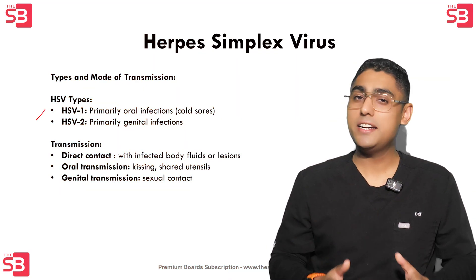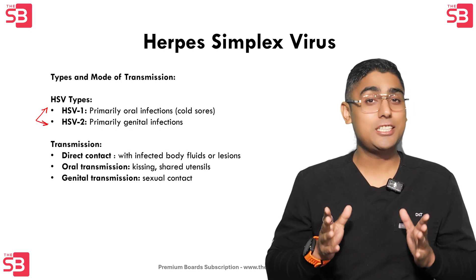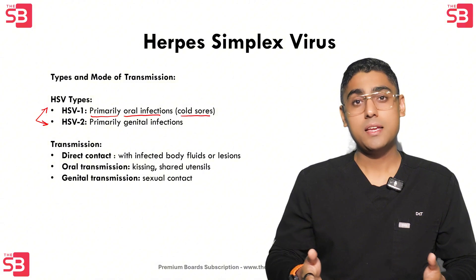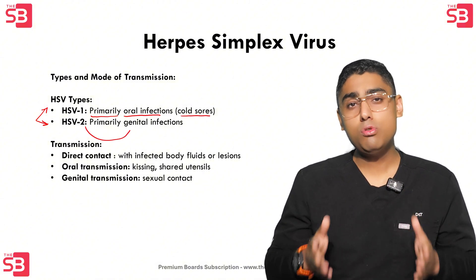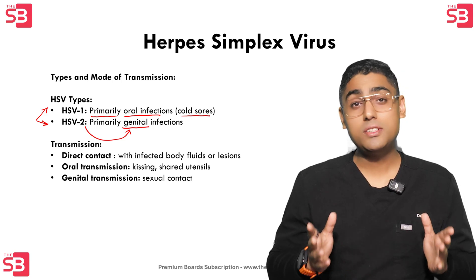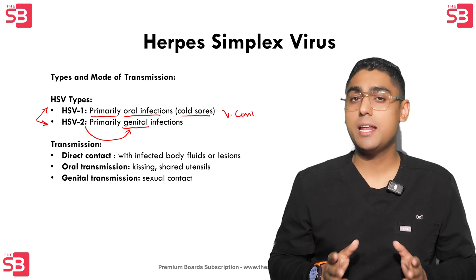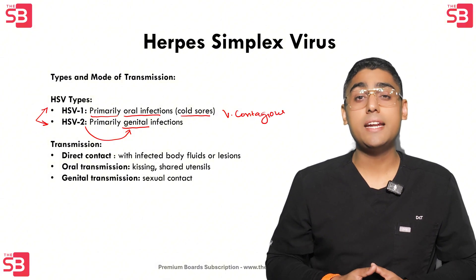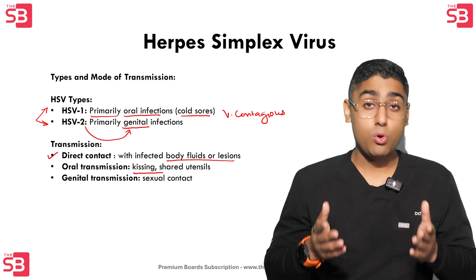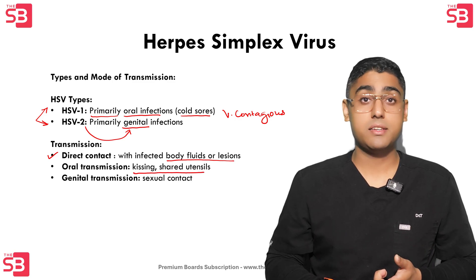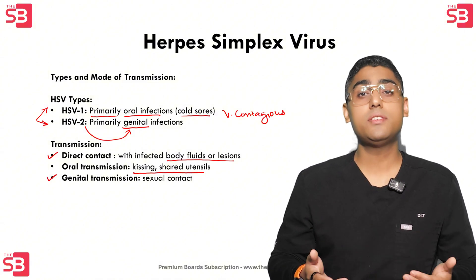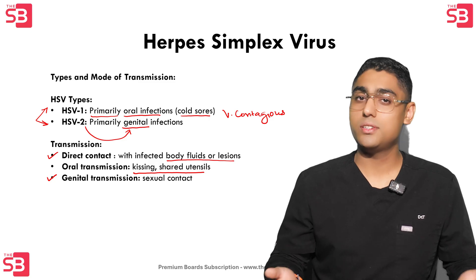Herpes simplex virus is divided into two main types: HSV-1, which is the primary cause of oral infections like cold sores, and HSV-2, which is commonly associated with genital infections. Both types are highly contagious and can be transmitted through direct contact with infected body fluids or sores. For oral transmission, simple actions like kissing or sharing utensils can spread the virus, while genital transmission occurs through sexual contact.